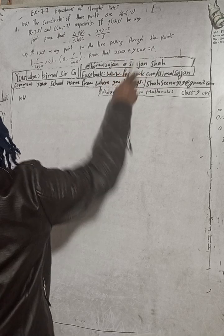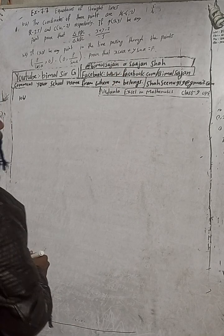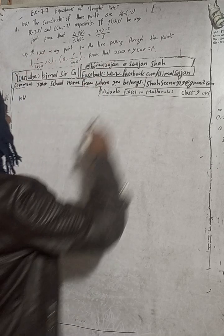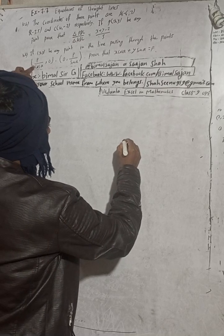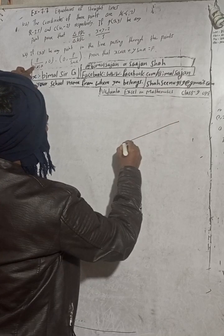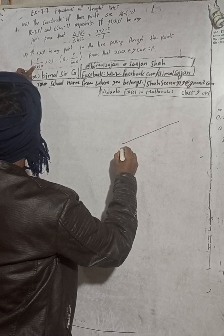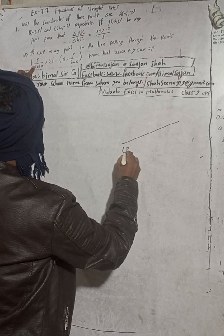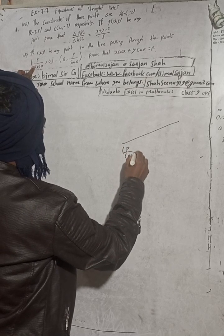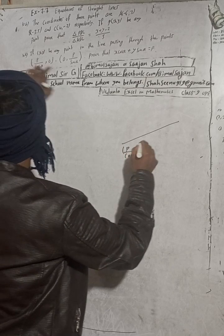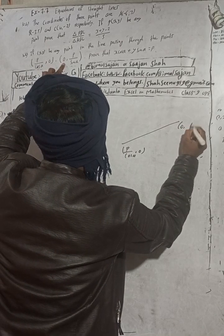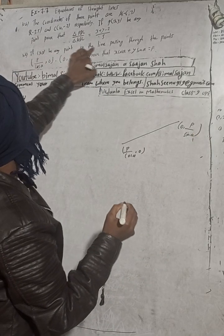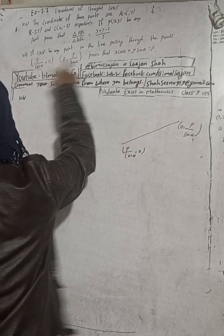So what this means is: if (x, y) be any point in the line joining these two points. The two points are: P/cosα comma 0 — this is one point — and the other point is 0 comma P/sinα. If (x, y) be any point in the line joining these two points, we need to work with that line.